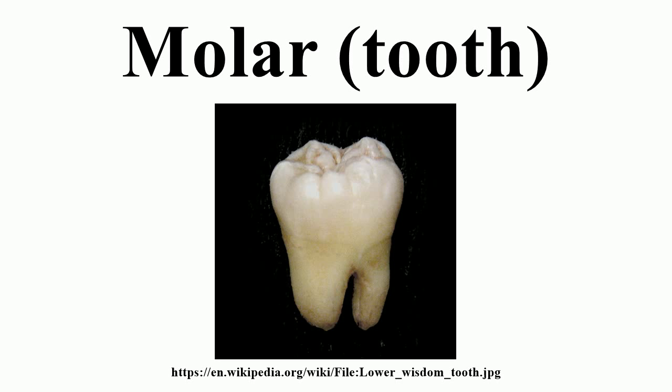In humans, the molar teeth have either four or five cusps. Adult humans have twelve molars, in four groups of three at the back of the mouth. The third, rearmost molar in each group is called a wisdom tooth. Ethnicity can also have an impact on the age at which this occurs, with statistical variations between groups, and in some cases it may not even erupt at all.